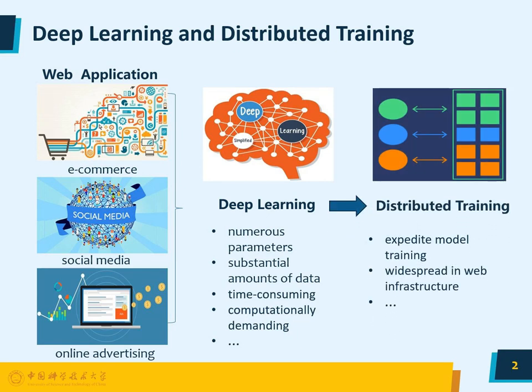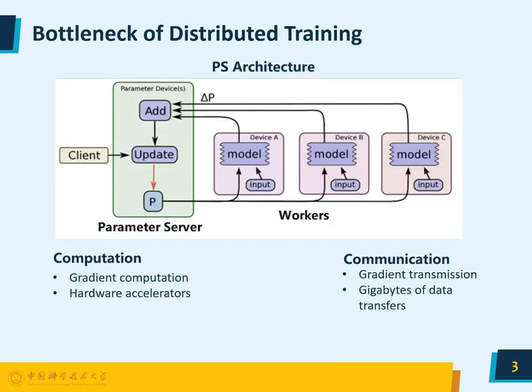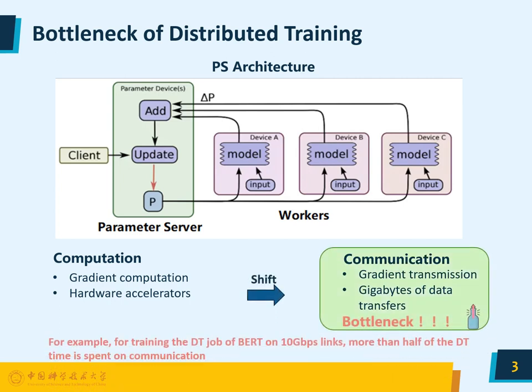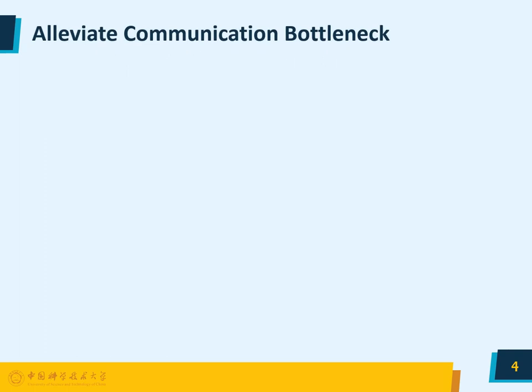To address this bottleneck and expedite model training, the adoption of distributed training is widespread in web infrastructure. Following the typical parameter server architecture, a distributed training system usually consists of a parameter server and multiple workers that perform many rounds of iterative training. Notably, with the rapid advancement of hardware accelerators like GPU and FPGA, the performance bottleneck in distributed training has shifted from computation to communication.